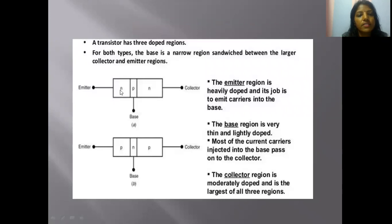In this diagram, there are three doped regions in the transistor and three leads: emitter, base and collector. The emitter is heavily doped because it emits carriers. The base is lightly doped, and the collector is less doped than the emitter. The collector region is the biggest region.